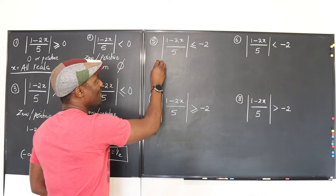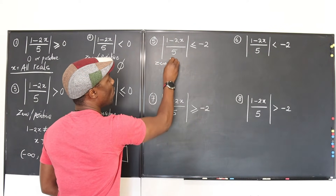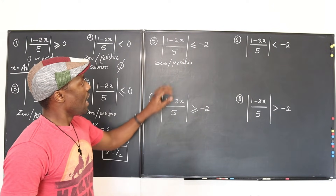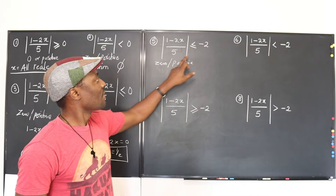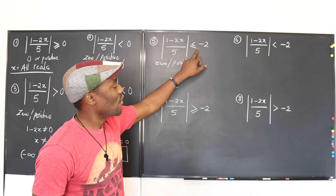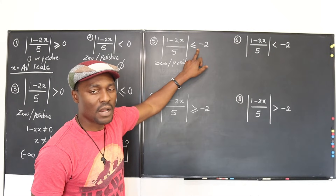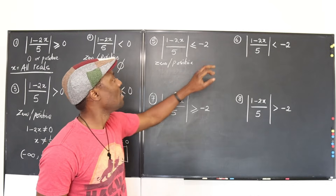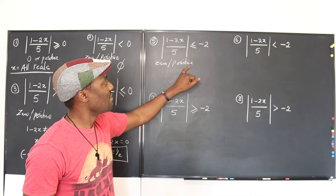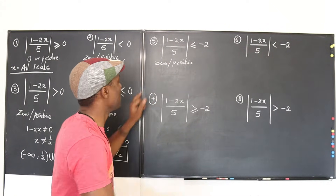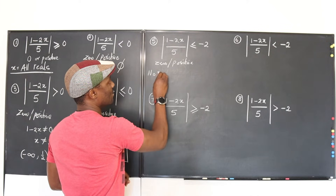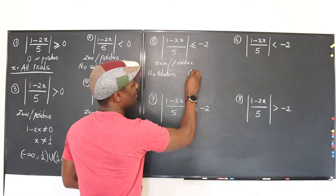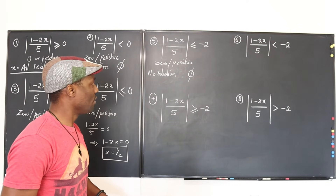Number five: the absolute value of the expression is less than or equal to negative 2. The output of absolute value is either zero or positive. Can zero be less than or equal to negative 2? No — zero is even greater than negative 2. Can a positive be less than or equal to negative 2? No. So this one is no solution — an empty set.